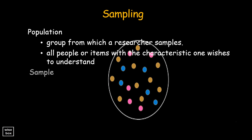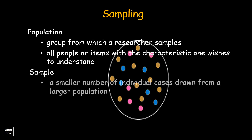The sample is a smaller number of individual cases drawn from a larger population. The goal of sampling is finding a representative sample or subset of that population, because there is very rarely enough time or money to gather information from everyone or everything in a population.